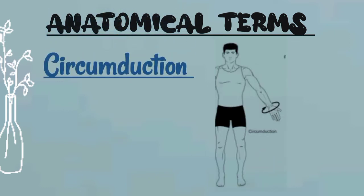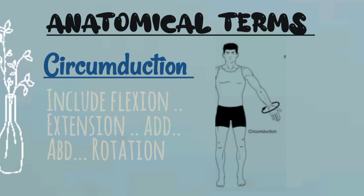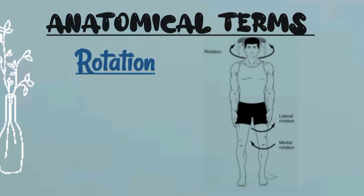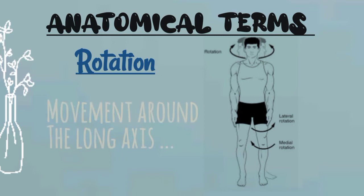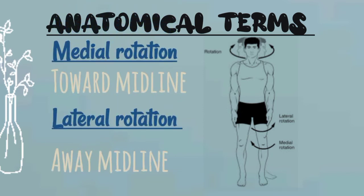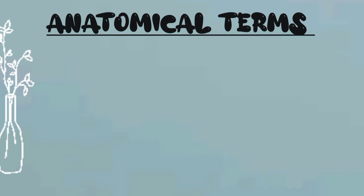The next term is circumduction. Circumduction is a complex sequence of movement combining flexion, extension, abduction, adduction, and rotation. The next term is rotation, which is applied to the movement of a part of the body around its long axis. Rotation can be toward the midline of the body, called medial or internal rotation, or away from the midline, called lateral or external rotation.